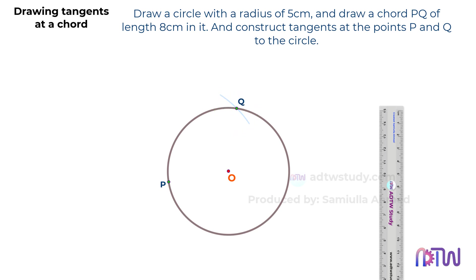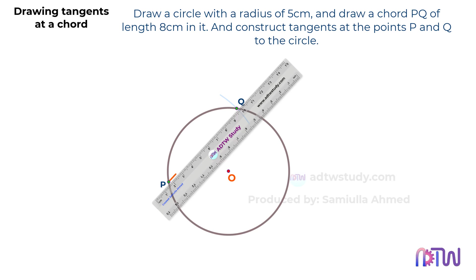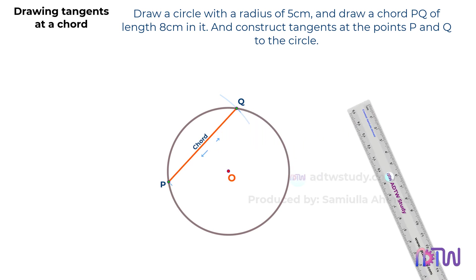This will be our point Q. Then, connect points P and Q with a straight line, forming the required chord of 8 centimeters in length.